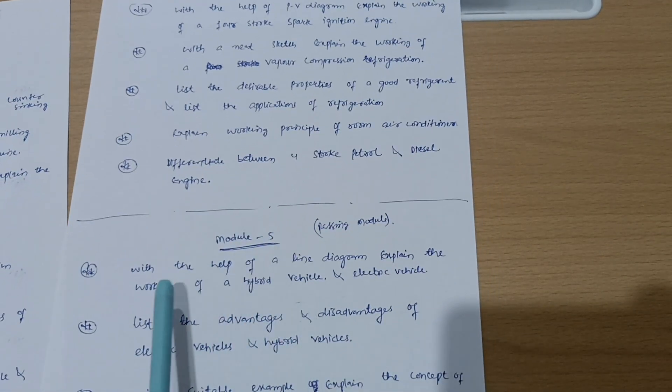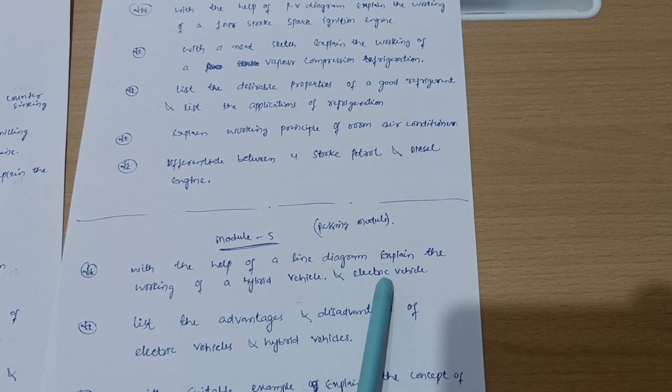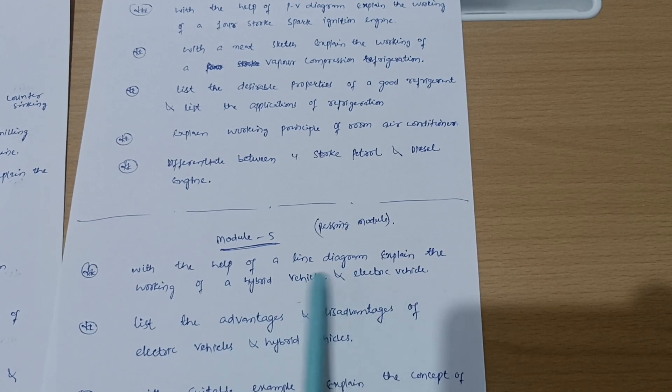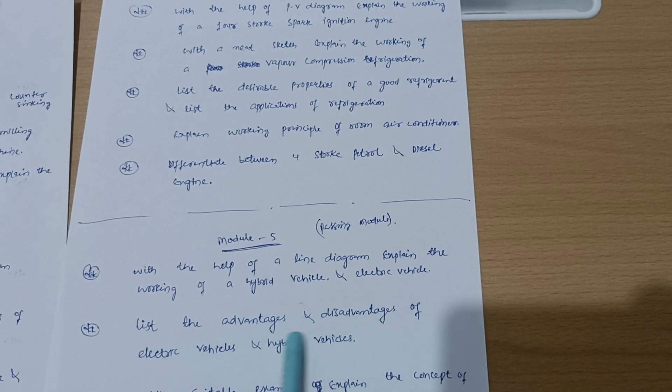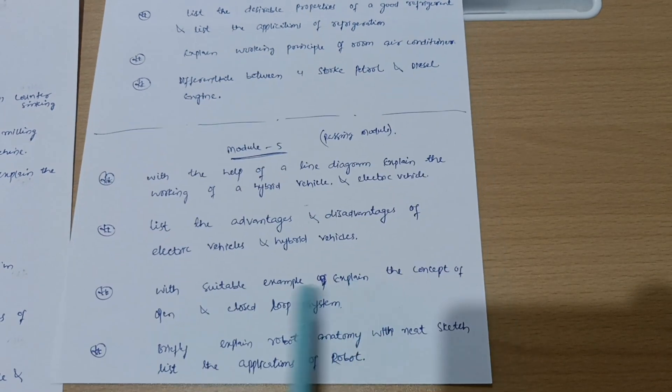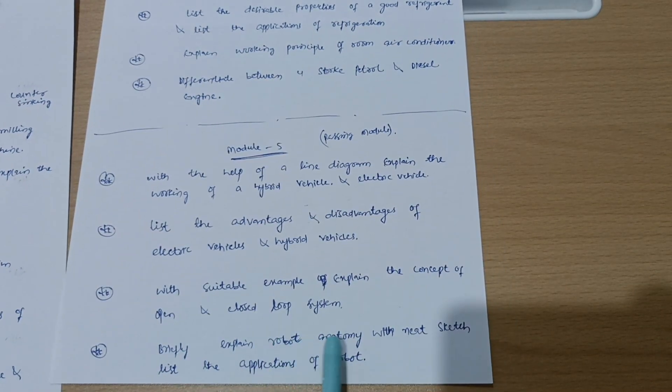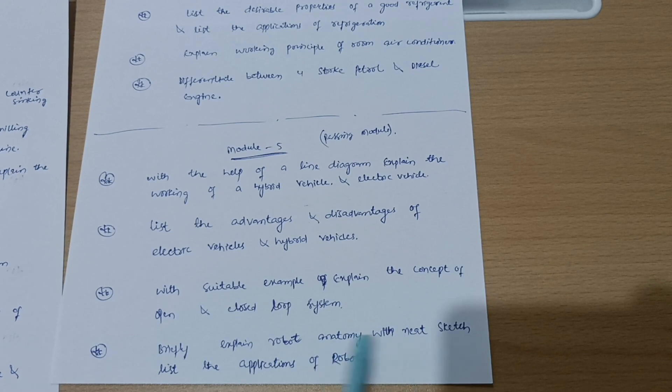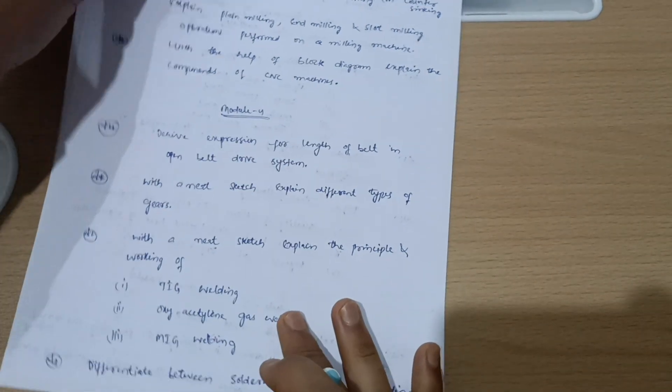Next passing module is module fifth, in which you have to cover: with the help of a line diagram explain the working of a hybrid vehicle and electrical vehicle. Sometimes they may ask you the components of these hybrid vehicle and electrical vehicle. List the advantages and disadvantages of electric vehicles and hybrid vehicles. With a suitable example expand the concept of open and closed loop system. Briefly explain robot anatomy with neat sketch. List the applications of robots. This is all about module fifth, go through this much portion.